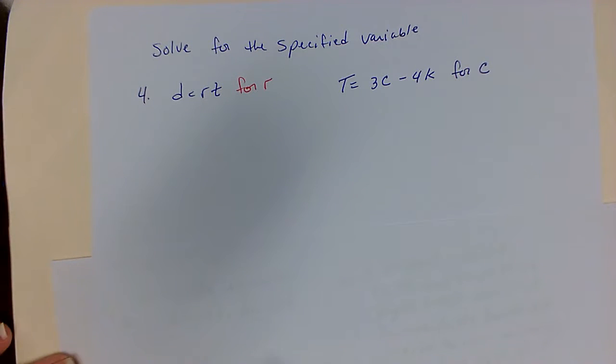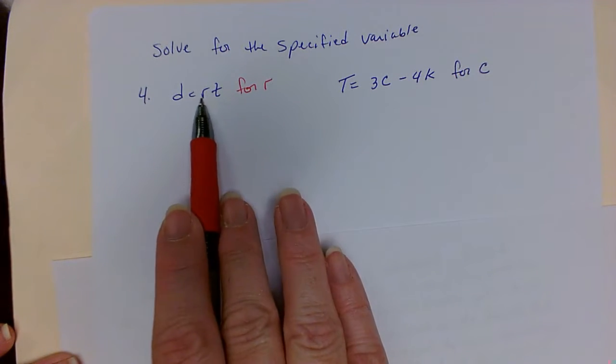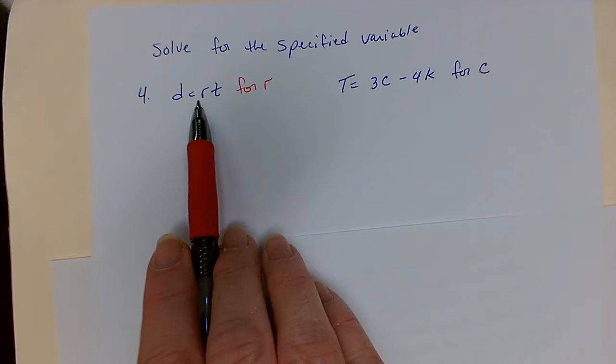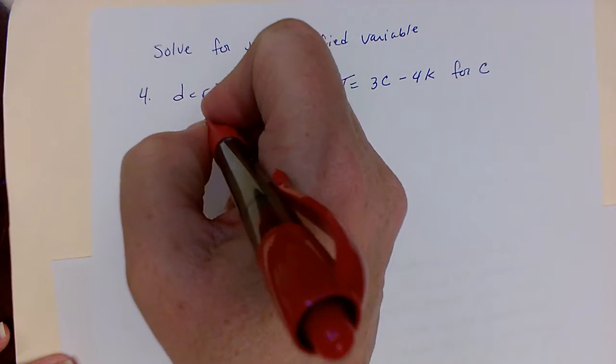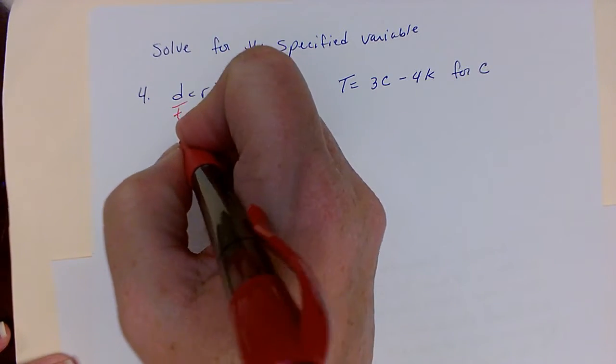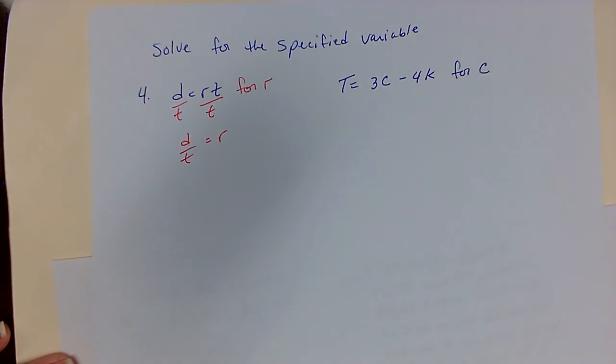If we're solving for r, I need to move away whatever is next to r. In this case, t is being multiplied by r. I'm going to do the opposite and divide. So d divided by t equals r.